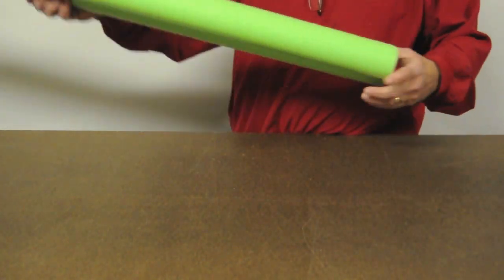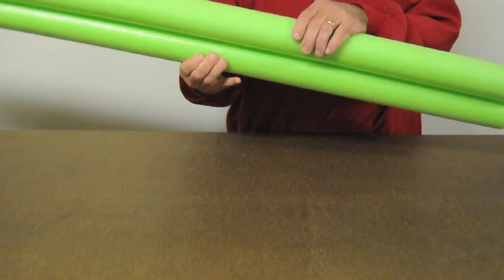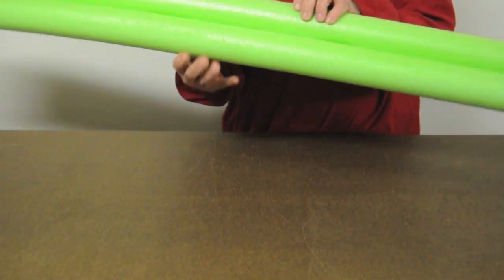To make this next step easier, the two pool noodles can be welded into one solid piece. For a quick video on how to do this, visit Robo-Promo.com.